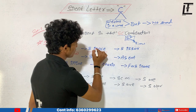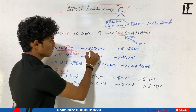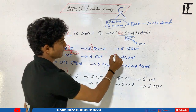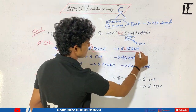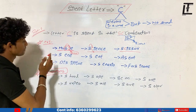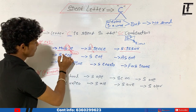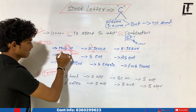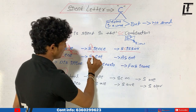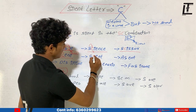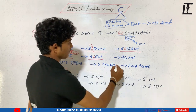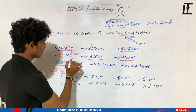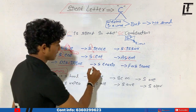The next word is 'scene' — there is no sound of C again, because it is in the SC combination. We pronounce this as 'scene'. Similarly, the same rule is applied to 'sense' and 'ascent'. In 'sense', C is after S in the SC combination. We also pronounce the next word as 'discipline'.